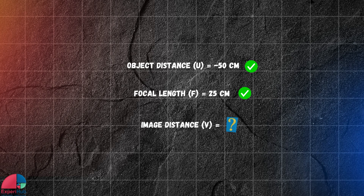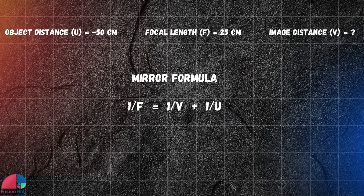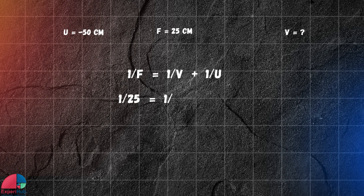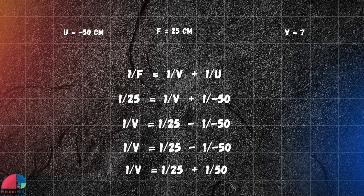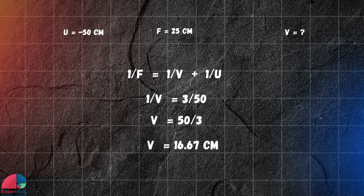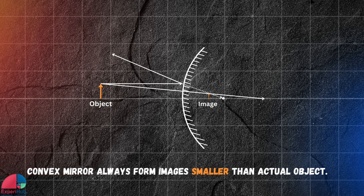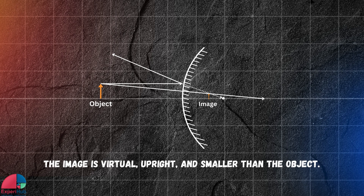If we know any two of the variables, we can easily find the third one using the mirror formula. Here we know U and F, and now we are going to find V, the image distance. Substituting values in the mirror formula — 1/F = 1/V + 1/U — we get image distance V equals 16.67 cm. Here is a quick fact: convex mirrors always form smaller images than actual objects. So the image formed is virtual, upright, and smaller than the object, with a distance of 16.67 cm from the mirror.